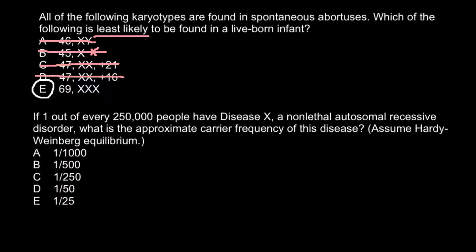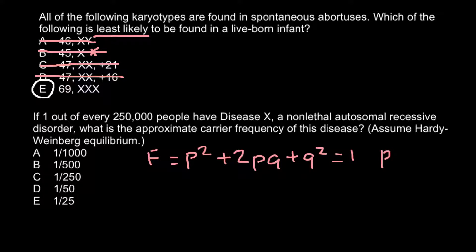The Hardy-Weinberg formula is a binomial expansion — probably everyone knows this formula. The frequency of the three genotypes made by two alleles equals: p² + 2pq + q² = 1. Also, p + q = 1. Here p² stands for the homozygous dominant condition, 2pq for the heterozygous condition, and q² for the homozygous recessive genotype. p is the dominant allele A, and q is the recessive allele a.